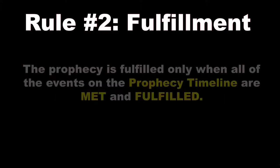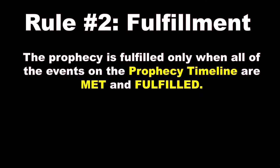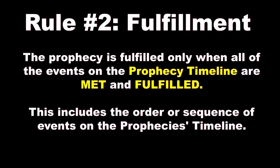Rule number two is fulfillment of the timeline. The prophecy is fulfilled only when all of the events on the prophecy timeline are met and fulfilled. This includes the order or sequence of events in the prophecy's timeline.